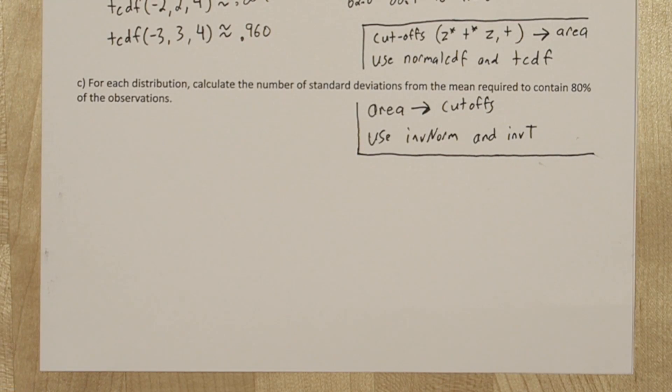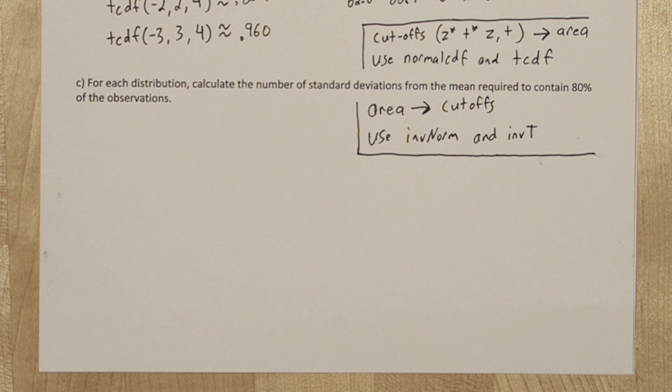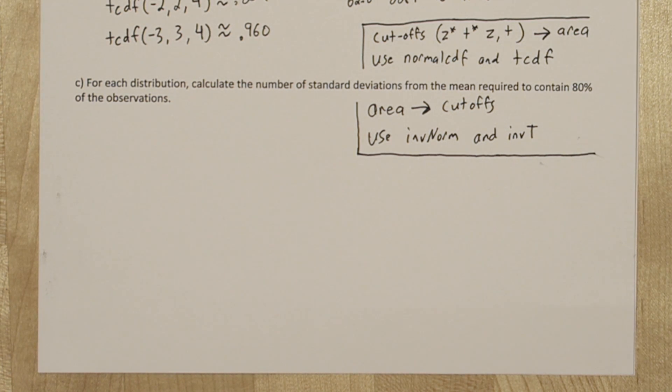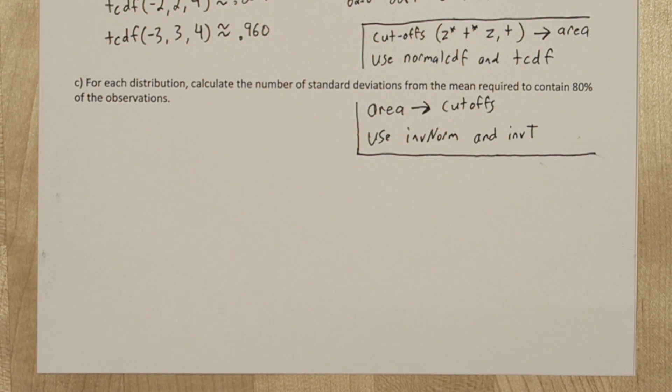On part c, we're going to be doing the process backwards. This time we're going from area to the cutoffs. So we're going to use inverse norm and inverse t to figure out how many standard deviations from the mean we have to go to cut off the middle 80% of the distribution.